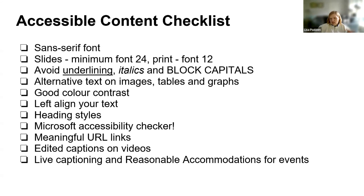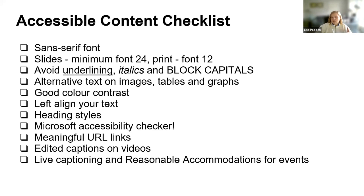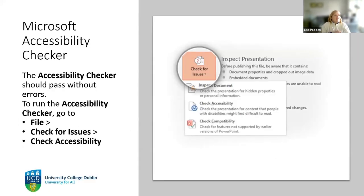Have meaningful URL links — don't put the full HTTP link into a digital document. Put actual linkable text that says what you're linking to. If you're creating videos, make sure you have edited captions, especially if you're procuring videos for your service — build that in from the beginning. If you have an event, look at getting live captioning and providing reasonable accommodations. That's just a question on your registration form asking if anybody needs anything additional. The Microsoft Accessibility Checker is the quickest and easiest tool you could ever use and will instantly improve the accessibility of the materials you create.